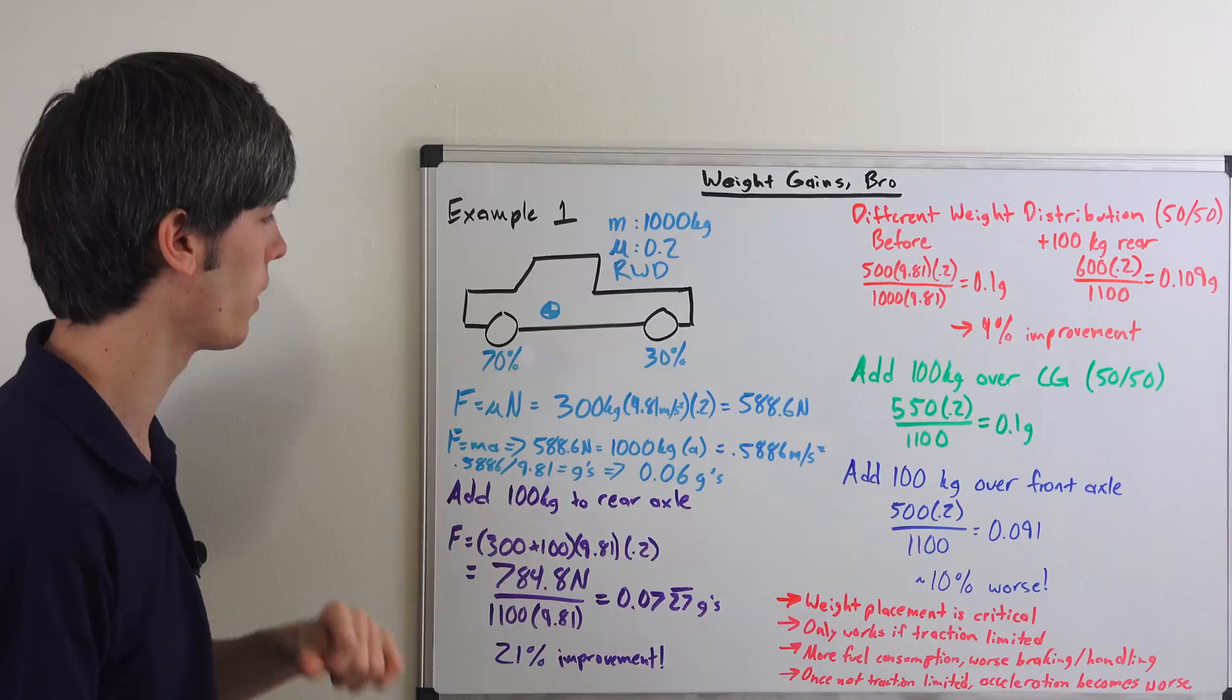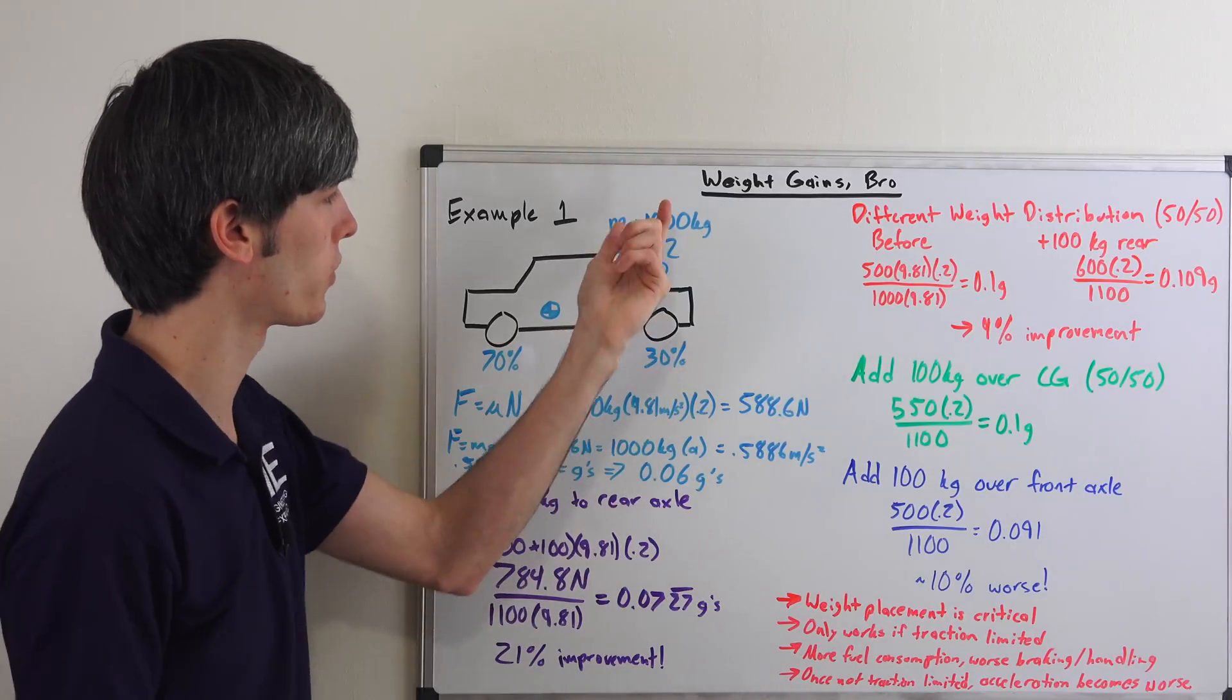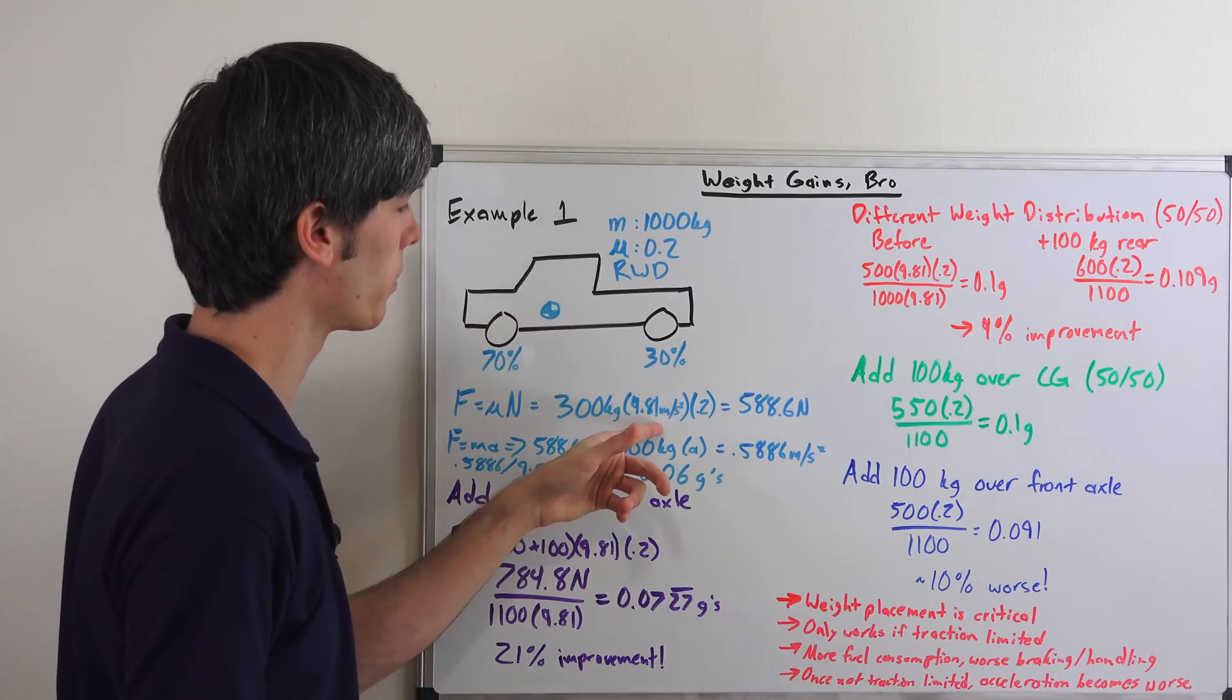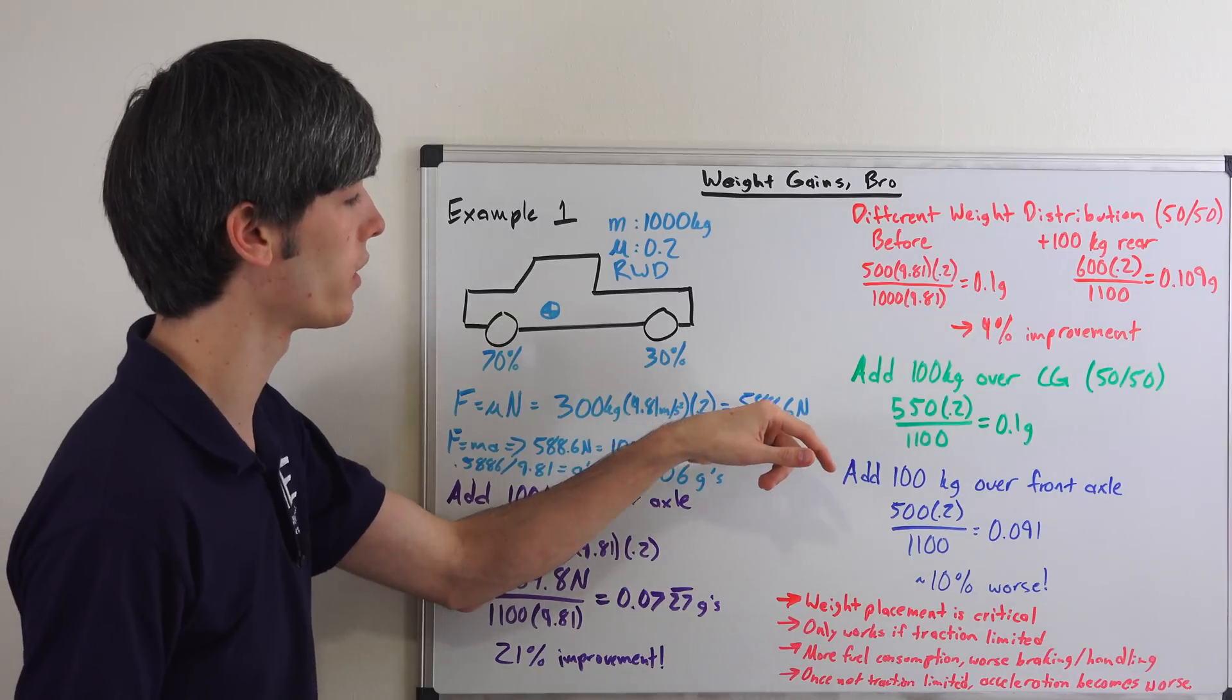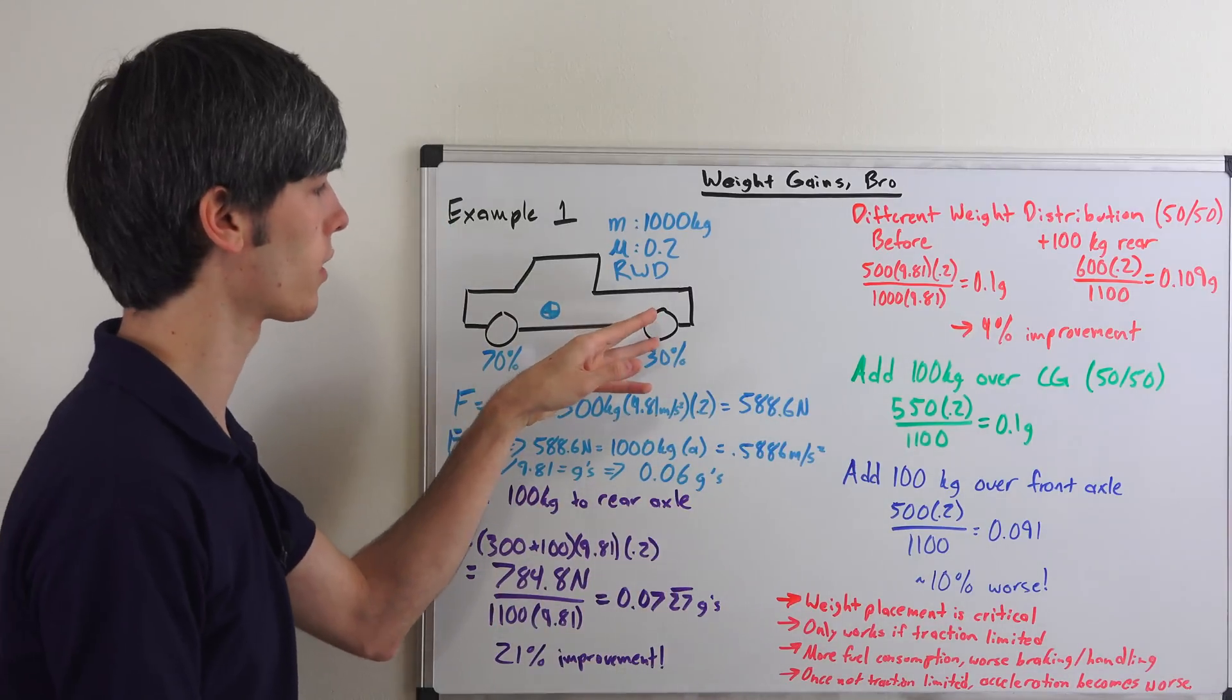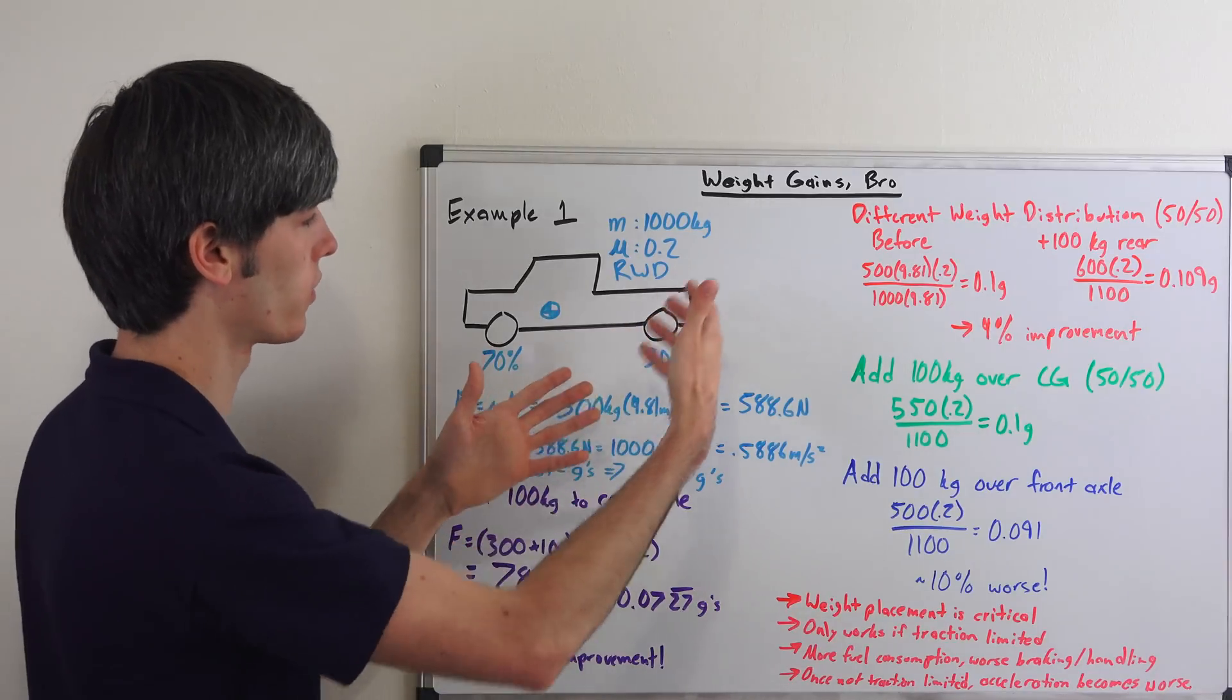So our lovely equation f equals mu n. So 300 kilograms that's the weight on the rear tire. 30% times a thousand equals 300 kilograms, multiply that by gravity 9.81 meters per second squared, multiply that by 0.2 and that will give us a force of 588.6 newtons. This is the maximum force that this tire can accelerate based on the traction that it has. Okay and of course that's both rear tires.